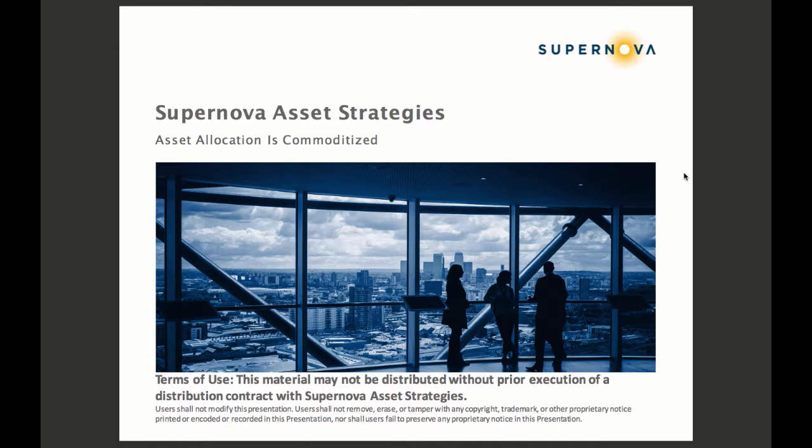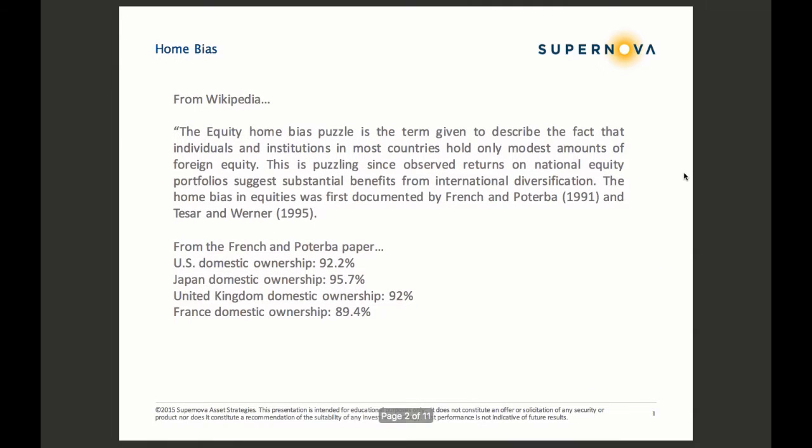Let's talk briefly about how asset allocation is being commoditized. First, a quick overview of home bias, and this is from Wikipedia.